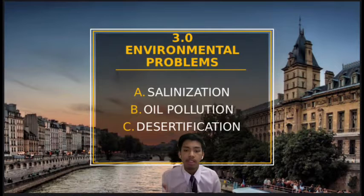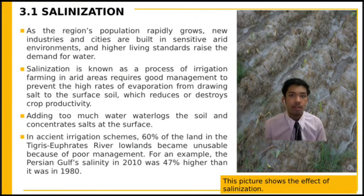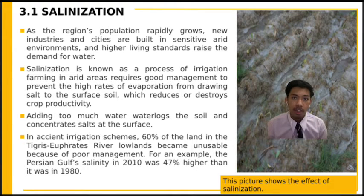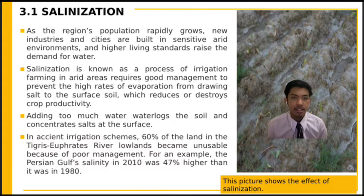Now we'll be moving on to environmental problems, which are salinization, oil pollution, and desertification. Salinization is a process where irrigation farming in an area requires good management to prevent high rates of evaporation from bringing salt to the surface, which reduces or destroys crop productivity. Adding too much water waterlogs the soil and concentrates salt at the surface.